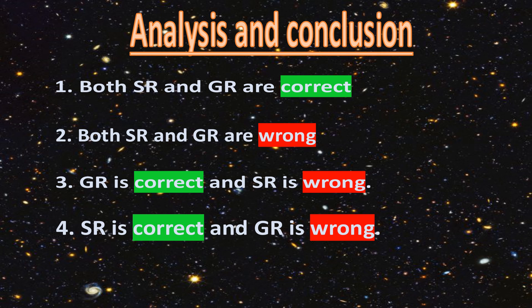First, special relativity and general relativity cannot both be correct, because they contradict each other. So this first statement is false. Two, both of them could be wrong, so then we will not have to deal with them contradicting each other — but that is not enough to conclude the statement is true, so let's skip it. Next, general relativity is correct and special relativity is wrong. This statement cannot be true because the formalism of general relativity incorporates special relativity. So if special relativity is wrong, then general relativity has to be wrong. So this statement is false.